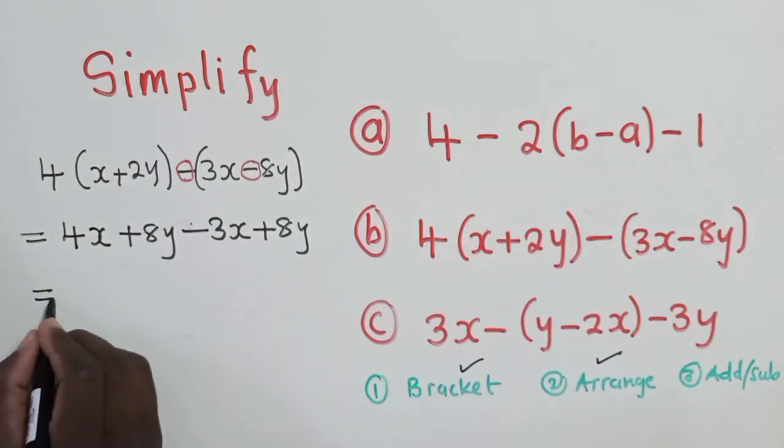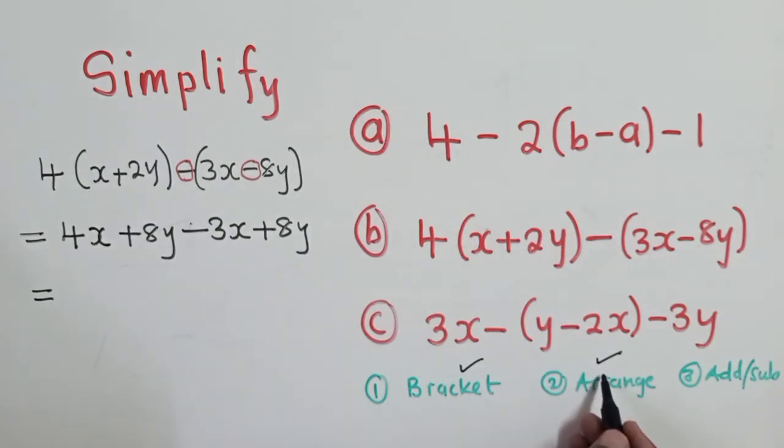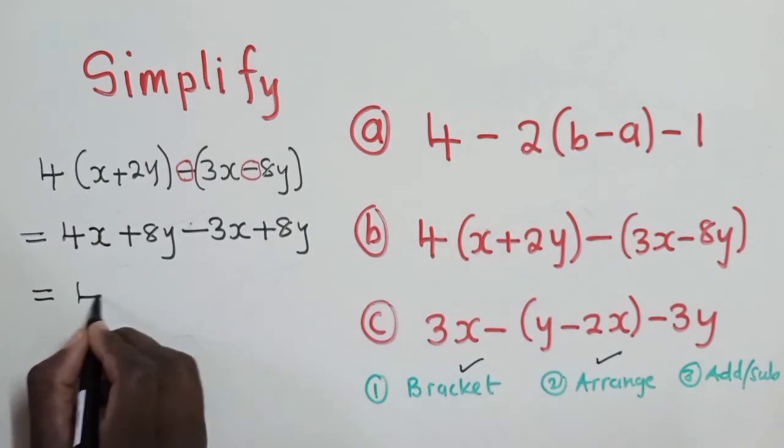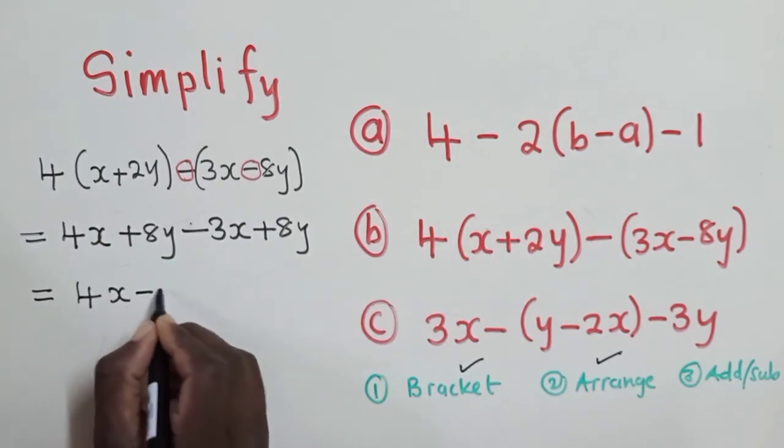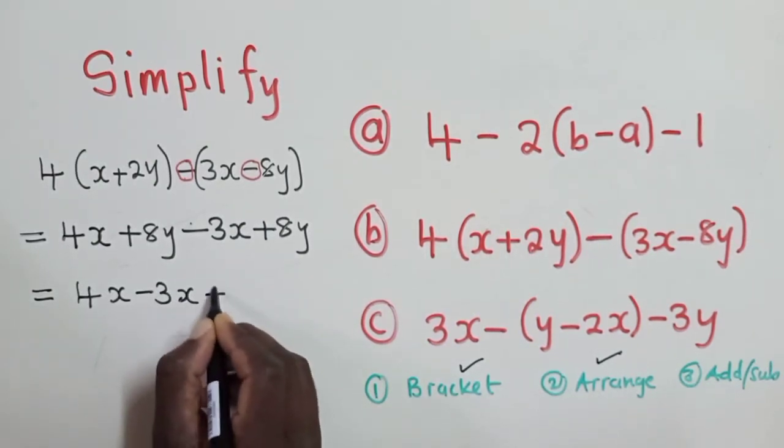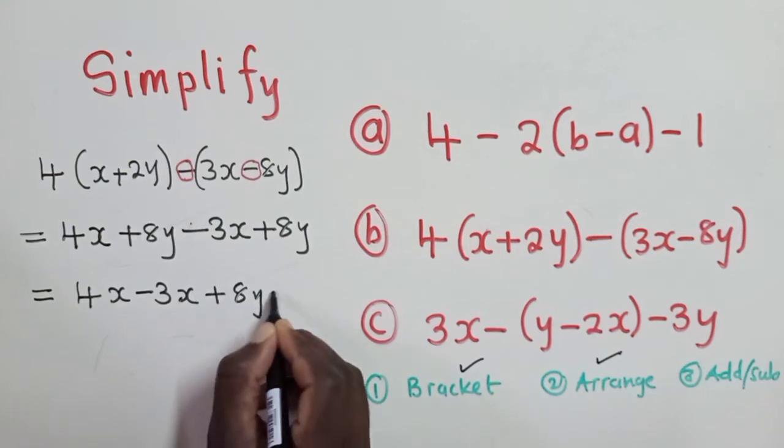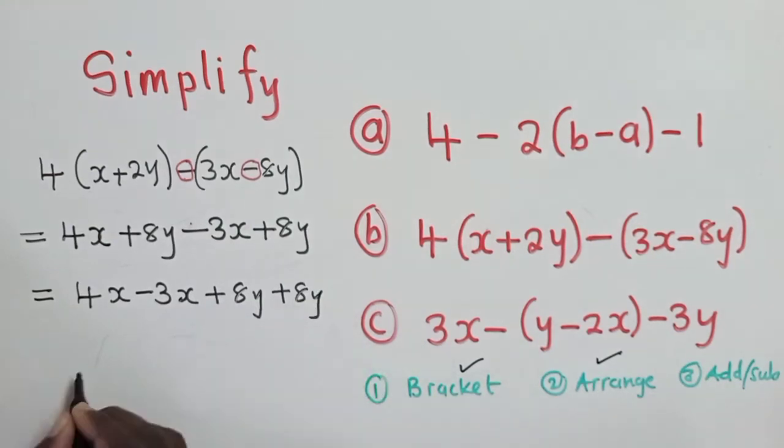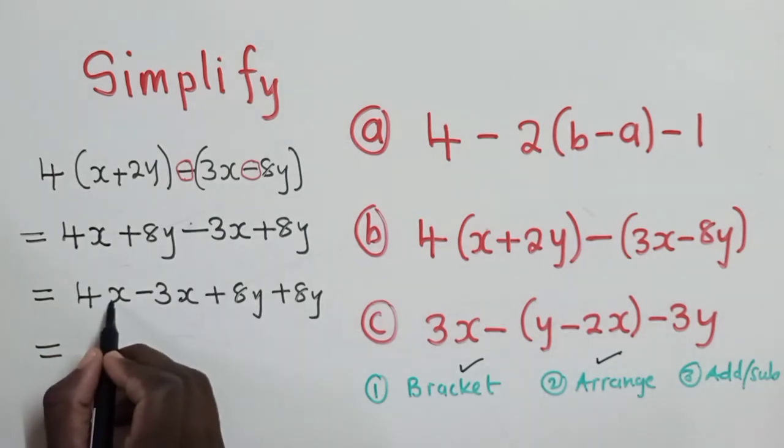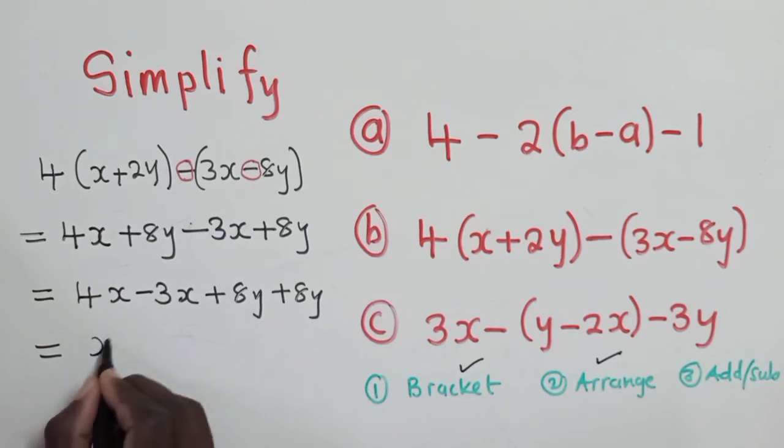Thereafter, we say equal to, we come to rule number 2. We arrange. So 4x minus 3x plus 8y plus 8y. So here we add or subtract. So we subtract here. 4x minus 3x, it will just give us x.